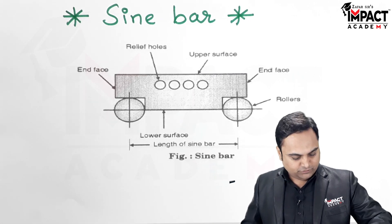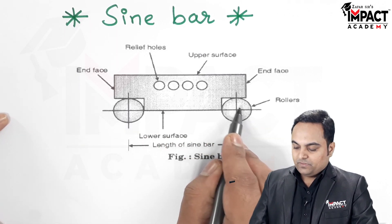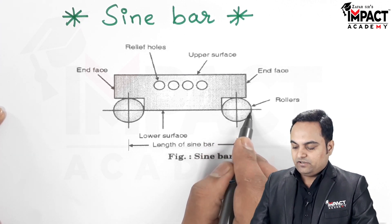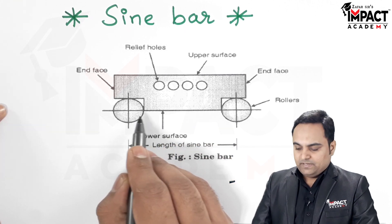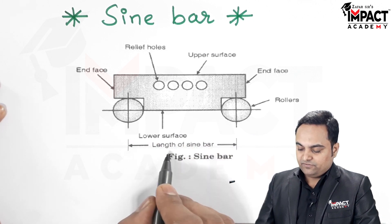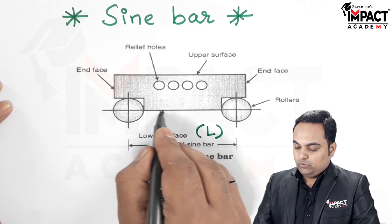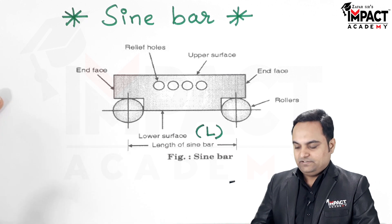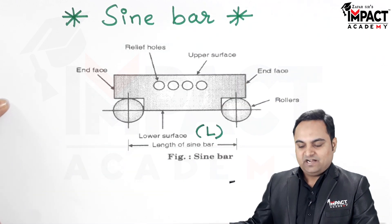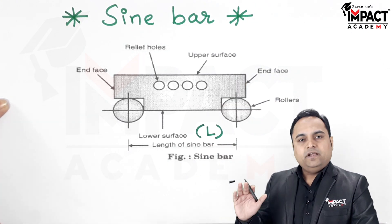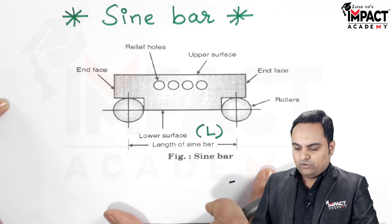As per the diagram, the sine bar consists of two rollers which are finely finished and perfectly ground — meaning their diameters are perfect and equal. The center distance between the rollers is fixed, denoted as the length of the sine bar, capital L. The lower surface is perfectly flat and completely lapped and ground, and similarly the upper surface is perfectly flat, lapped and ground — a highly polished surface with no surface irregularities.